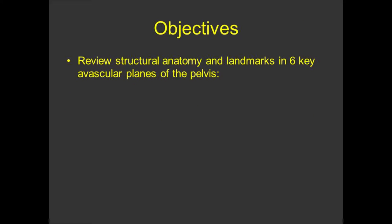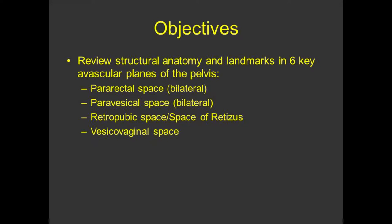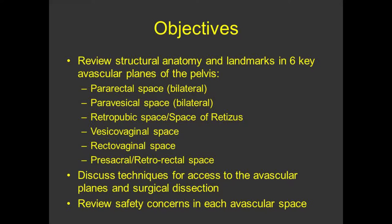The objectives of our video are to review the structural anatomy and landmarks in six key avascular planes of the pelvis: the pararectal space, the paravesical space, the retropubic space or space of Retzius, the vesicovaginal space, the rectovaginal space, and the presacral or retrorectal space. For each space, we will discuss techniques for access and surgical dissection and review relevant safety concerns.